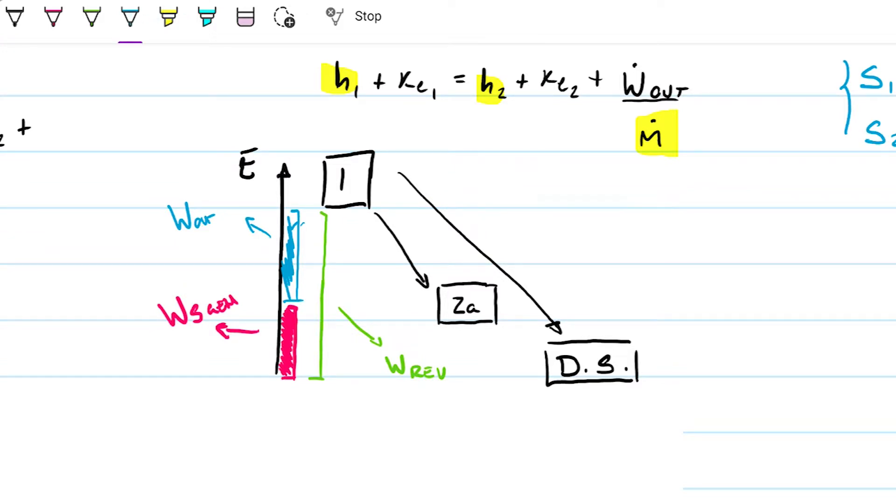But if I want to just know this guy here, the green one, the reversible work, then it's not just a matter of taking the energy or the entropy here and subtracting by the entropy here. Because this really has to do with this energy that's lost due to irreversibilities.